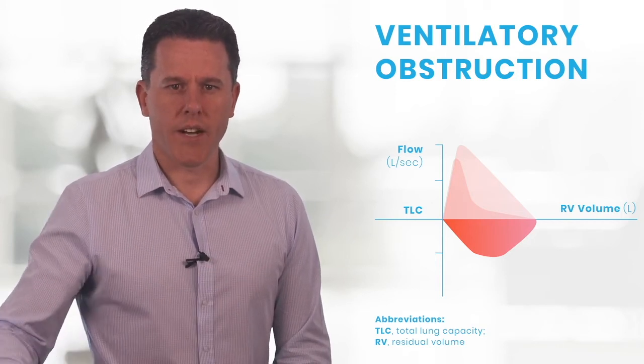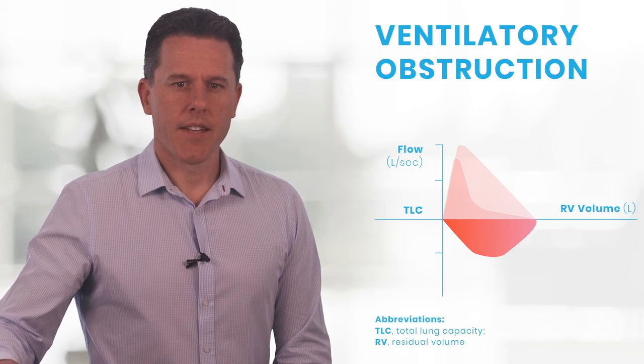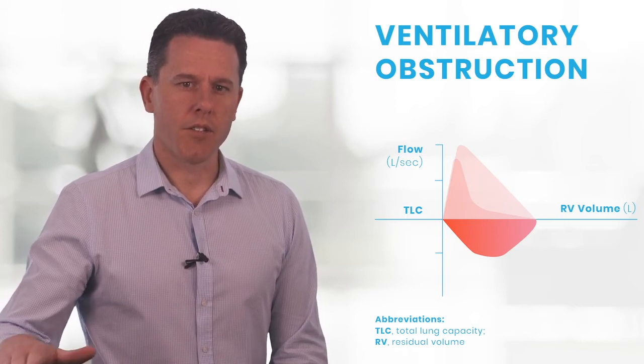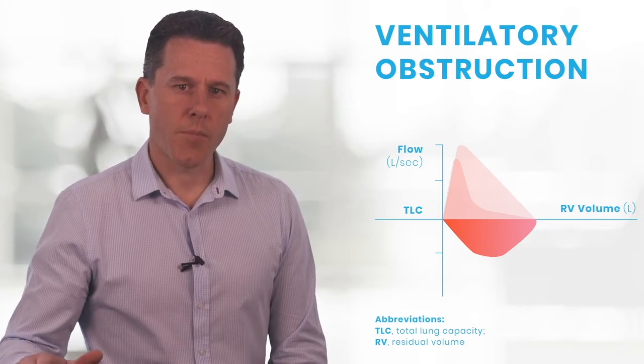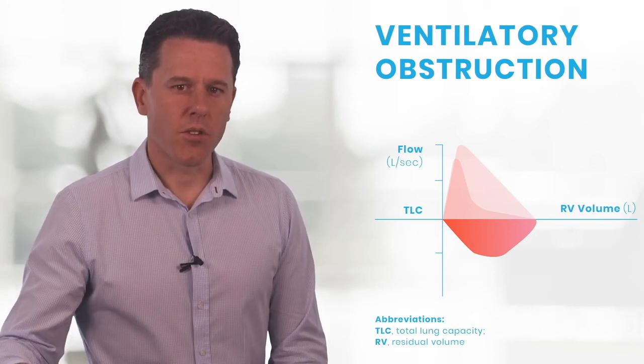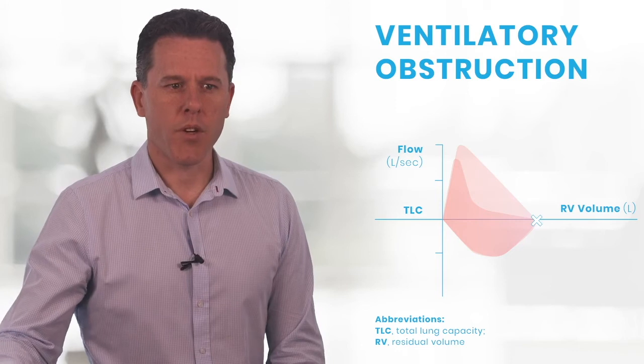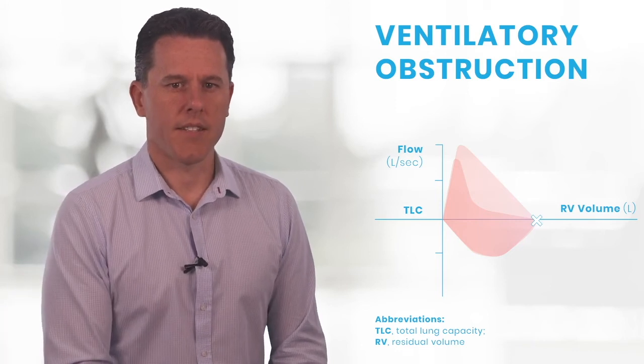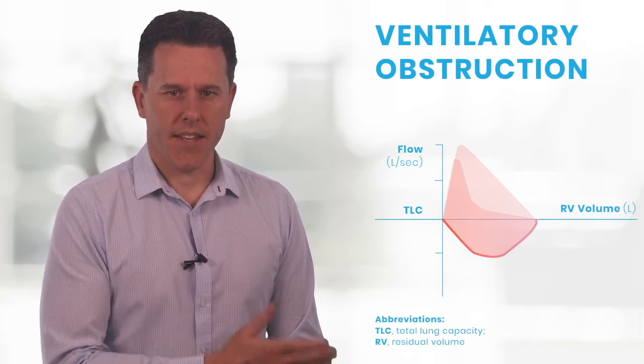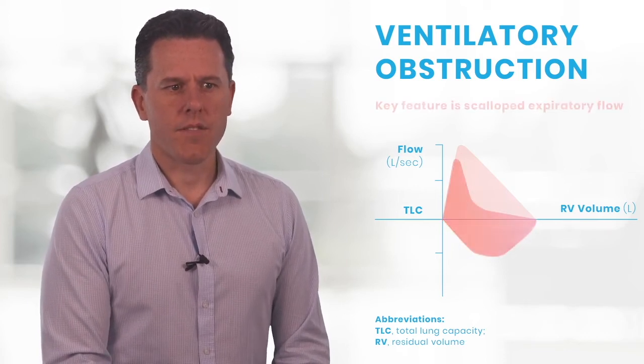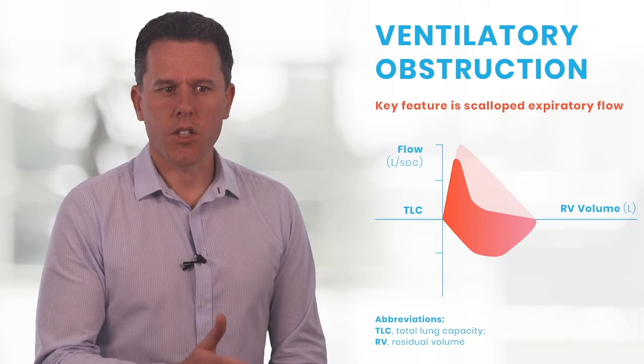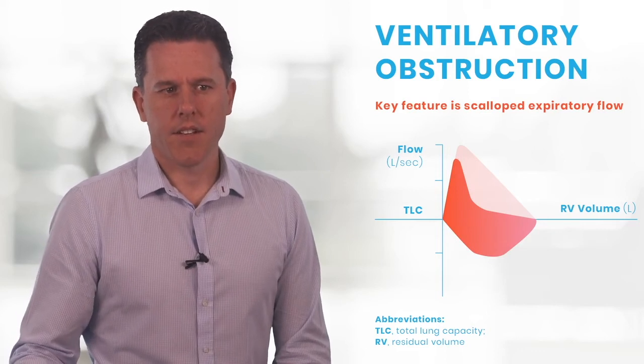The patient then expires all the way to residual volume, and because there's no airflow restriction, so the forced vital capacity is normal, it still hits the same point on the horizontal axis. Then once again they inspire back to total lung capacity. The feature of that graph is really the scalloped out effect of the expiratory flow-volume loop.